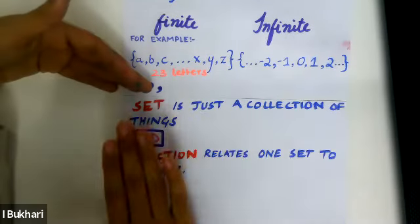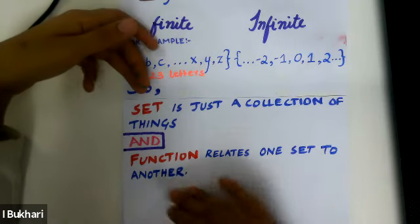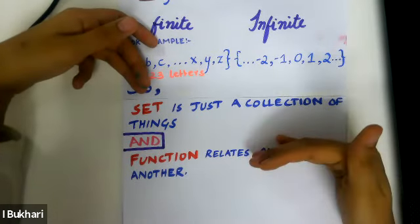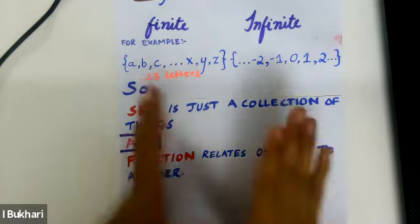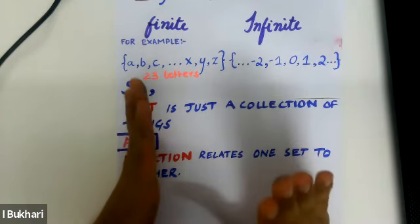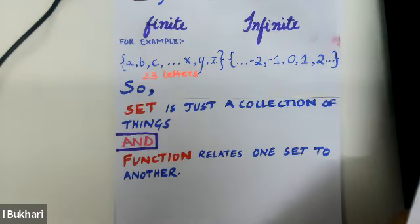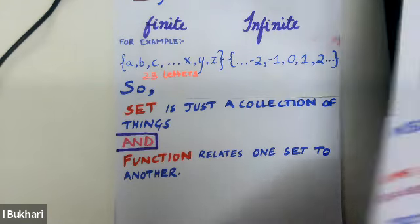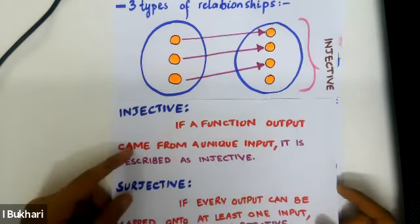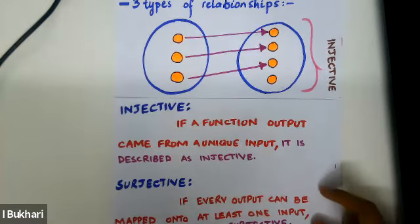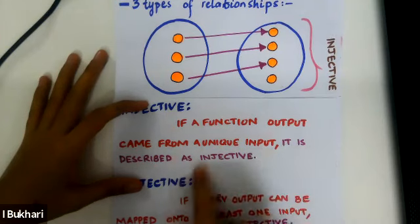A set is just a collection of things, and a function relates one set to another, but it does this in three different ways, each unique and different. The first one is injective. If a function's output came from a unique input, it is described as injective.